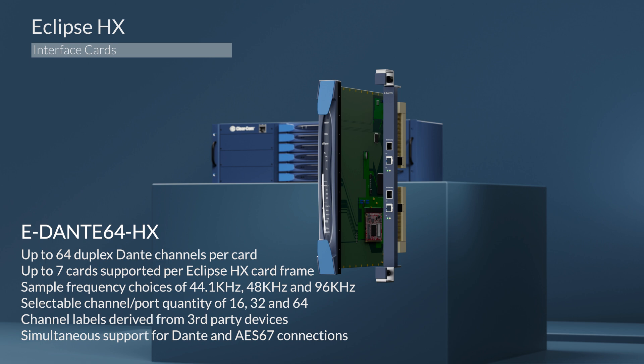Channel labels can be derived from third-party devices. Optional SFB fiber interface for both primary and secondary network interfaces are available. You also have Vox on all 64 inputs, and network redundancy with primary and secondary NICs. On each card, any number of channels up to 64 can be configured as intelligent trunks. One or more cards can support intelligent linking to other Eclipse HX matrix frames over IP infrastructure.